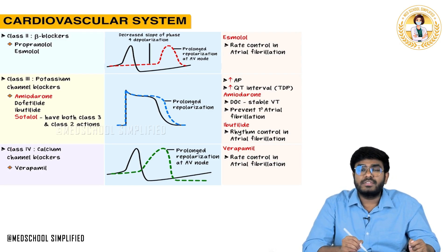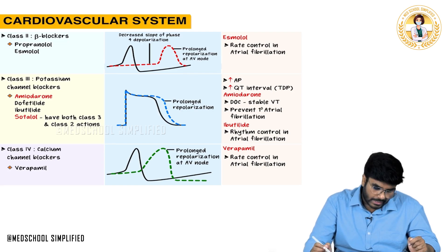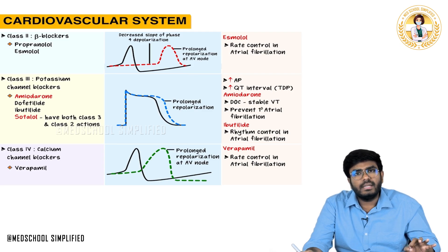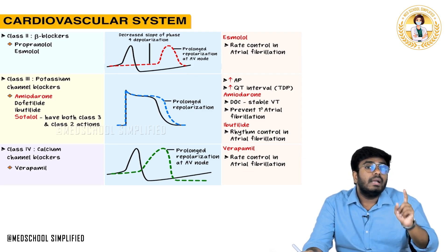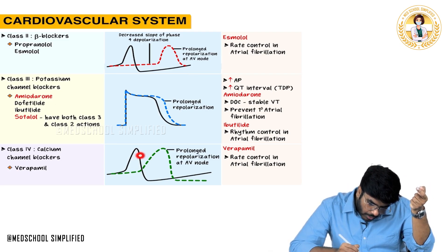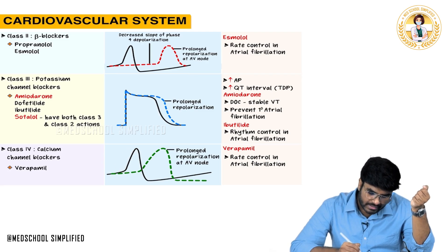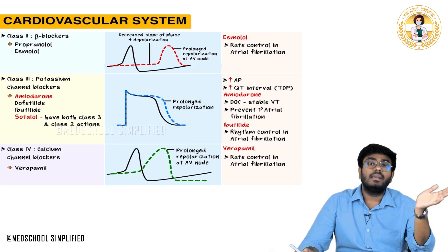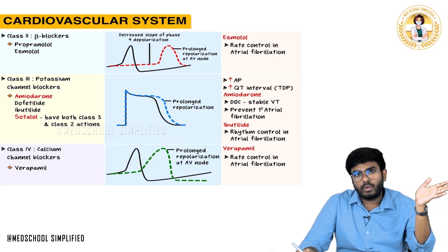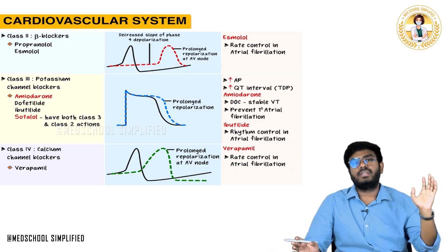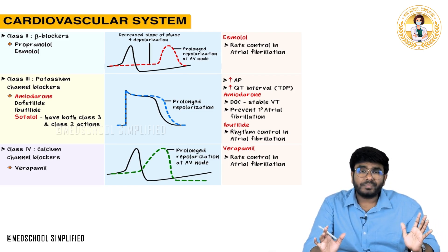Class 4 anti-arrhythmic drugs are calcium channel blockers, with verapamil as the example. Calcium is very important for depolarization in the SA node. When calcium channels are blocked, it takes much longer for depolarization to occur. Verapamil acts on the SA node, increases the time for depolarization, and is used to control the rate in atrial fibrillation.